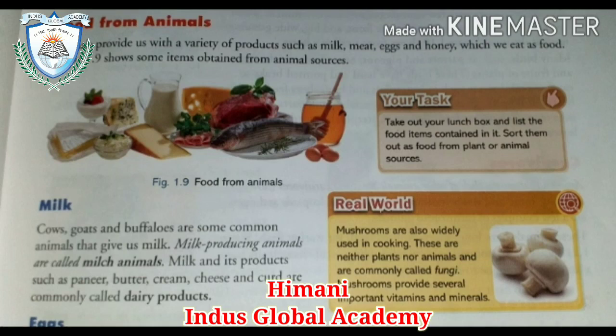First is milk. Cow, goat, and buffalo are some common animals that give us milk. Milk-producing animals are called milk animals. Milk and its products such as paneer, butter, cream, and cheese are commonly called dairy products.